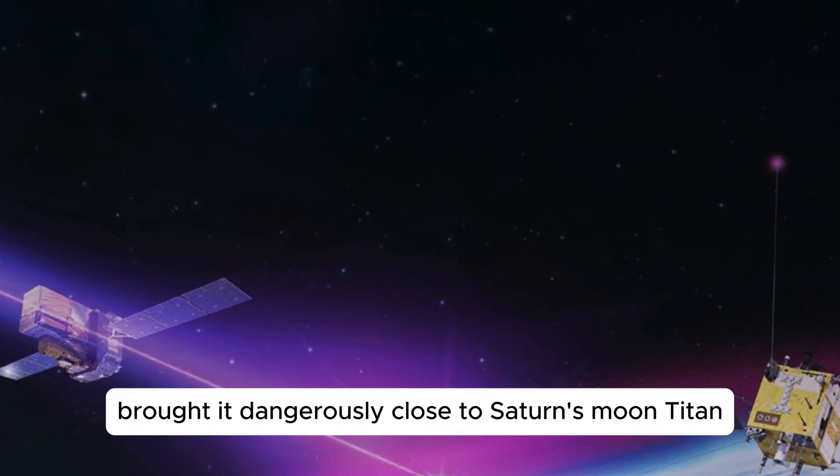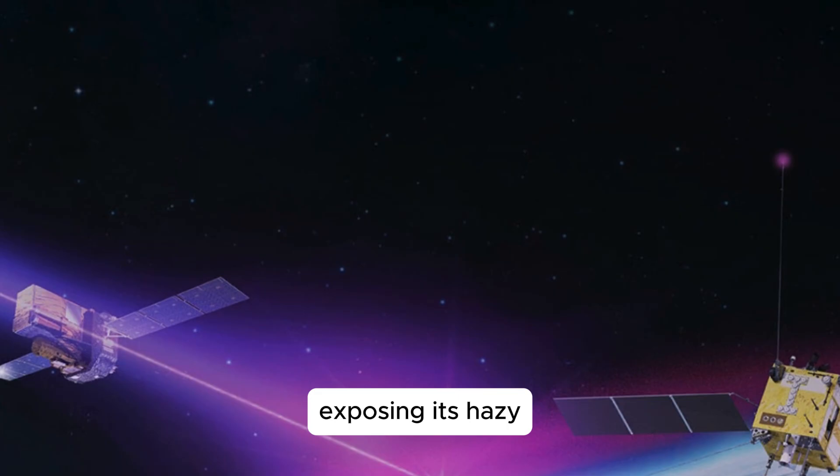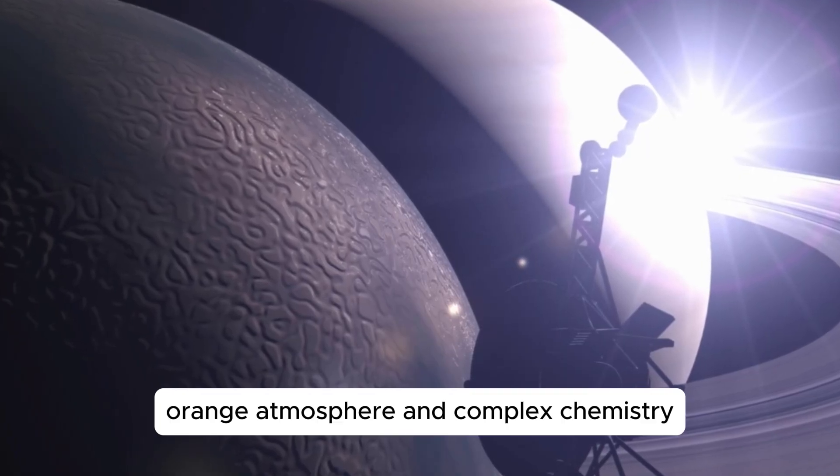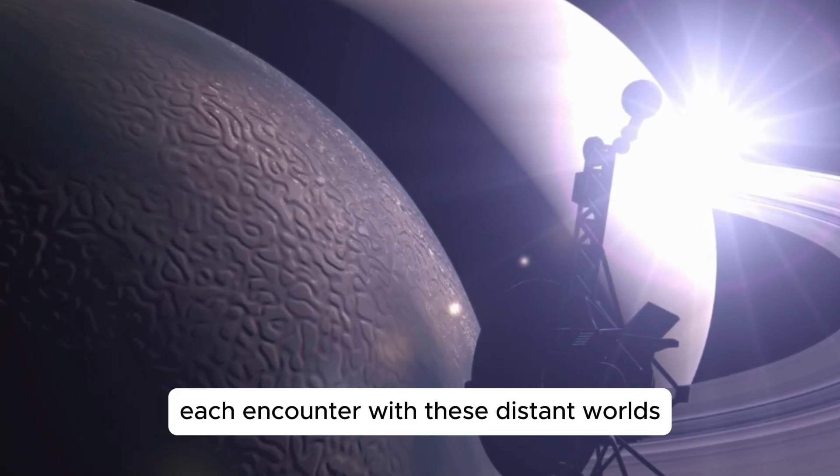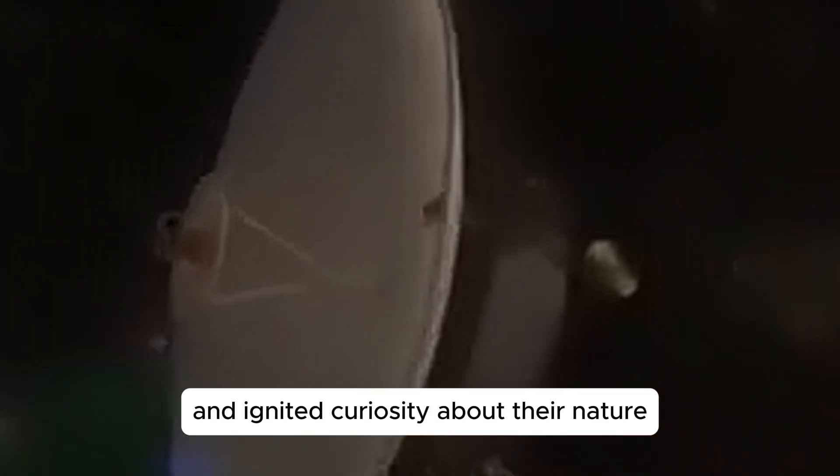Voyager 1's trajectory brought it dangerously close to Saturn's moon Titan, exposing its hazy orange atmosphere and complex chemistry. Each encounter with these distant worlds provided a wealth of data that challenged existing theories and ignited curiosity about their nature.